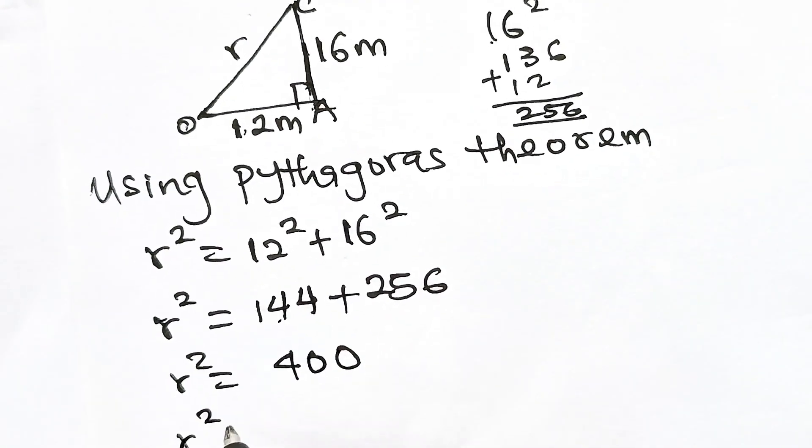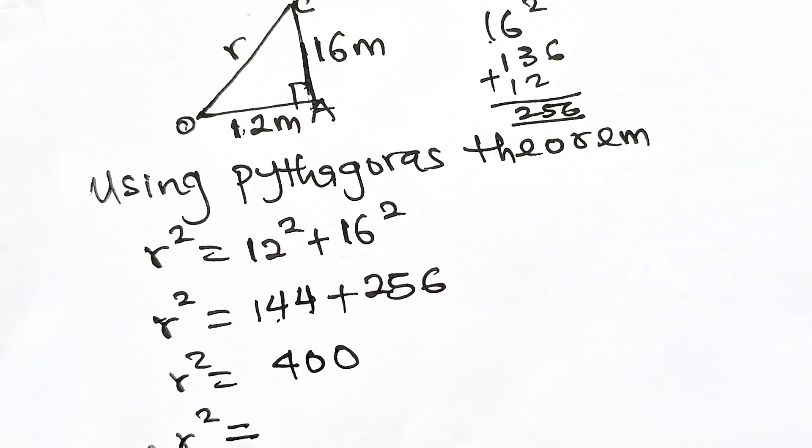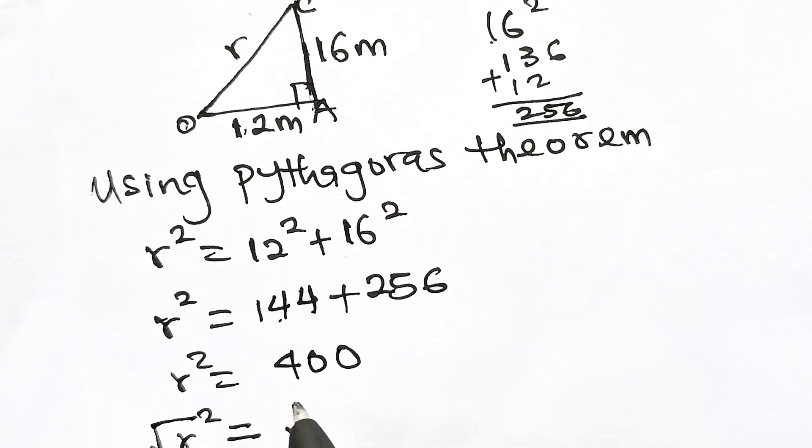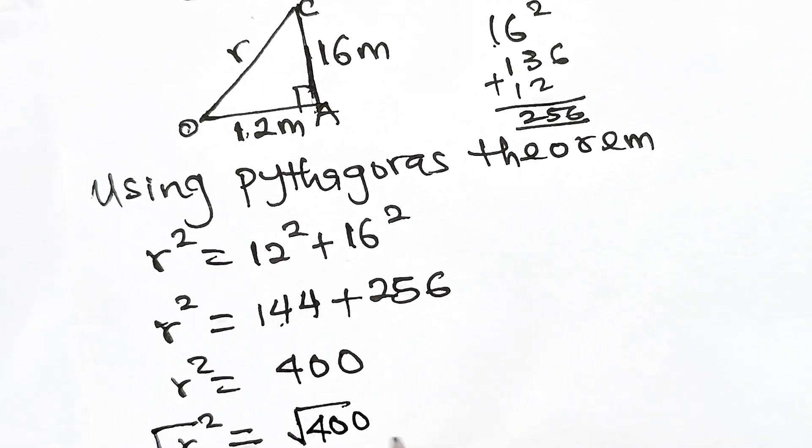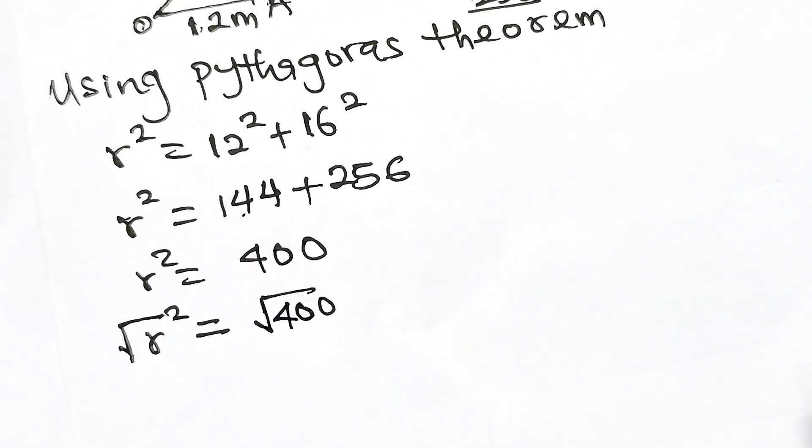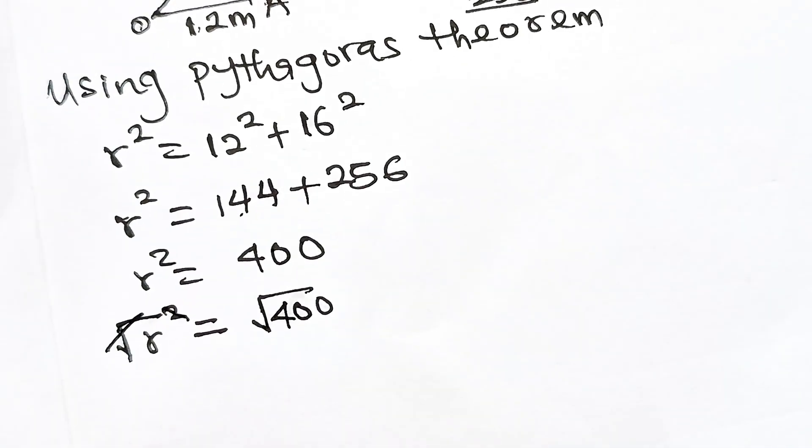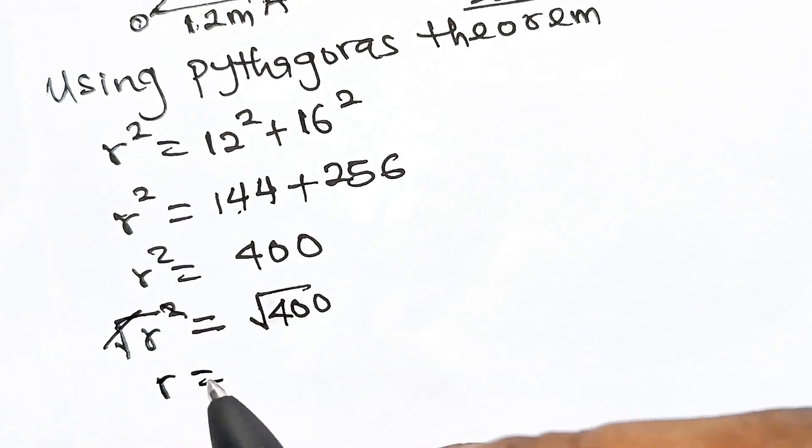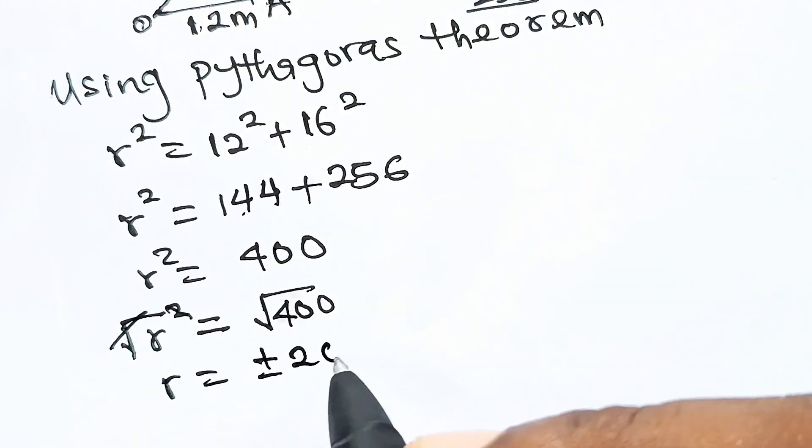So r² = 400. If we take square root of both sides, r = √400 = ±20.